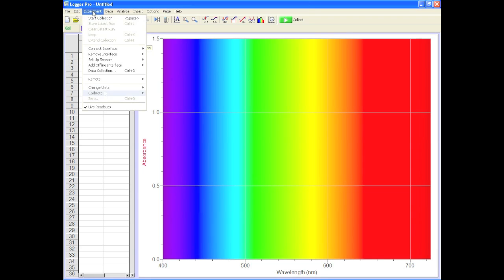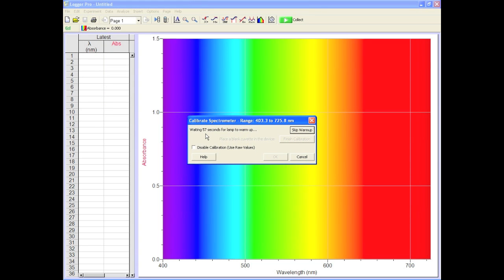On Logger Pro, select Experiment, Calibrate, Spectrophotometer. Now you gotta wait for it to warm up for a minute. When it's done, press Calibrate now and in a few seconds press OK.